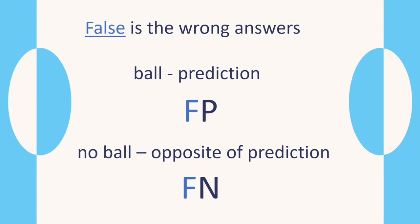False means the wrong answer. So if we predicted a ball and it wasn't, that's a false positive. If we said it was no ball and we got that wrong, it's a false negative. So if we say ball and it's wrong — false positive. And if we say no ball and it's wrong — false negative.